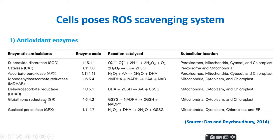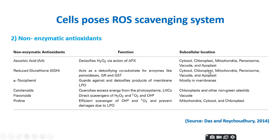Glutathione reductase, glutathione peroxidase, and guaiacol peroxidase — these four enzymes, together with ascorbate peroxidase, are involved in the ascorbate-glutathione cycle, which reduces H₂O₂ to water. These are the subcellular localizations of these enzymes.